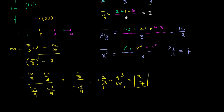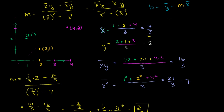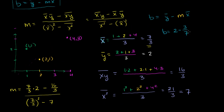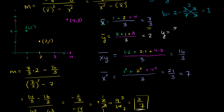Now we can figure out our y-intercept. b = mean of y's − m × mean of x's = 2 − (3/7)(7/3). Since 3/7 and 7/3 are reciprocals, they cancel to 1. So our y-intercept is 2 − 1 = 1. Our regression line is y = (3/7)x + 1.